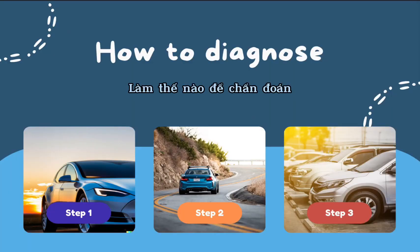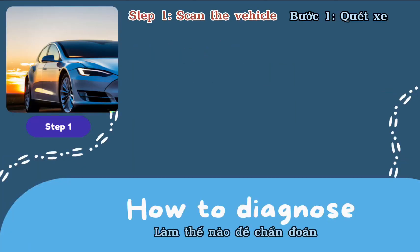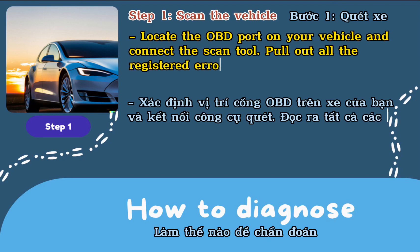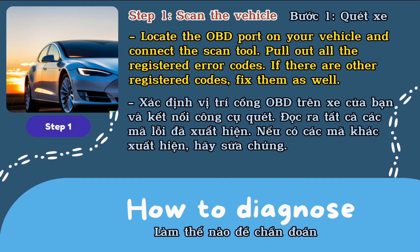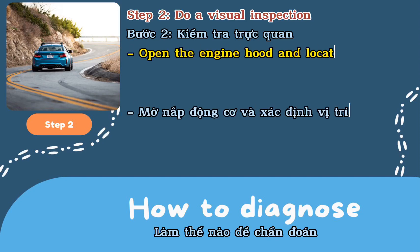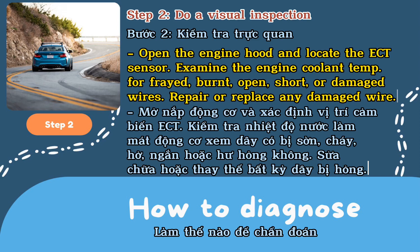How to diagnose: Step one — scan the vehicle. Locate the OBD port on your vehicle and connect the scan tool. Pull out all registered error codes; if there are other registered codes, fix them as well. Step two — do a visual inspection. Open the engine hood and locate the ECT sensor. Examine the engine coolant temperature sensor wires for frayed, burnt, open, shorted, or damaged wires, and repair or replace any damaged wire.